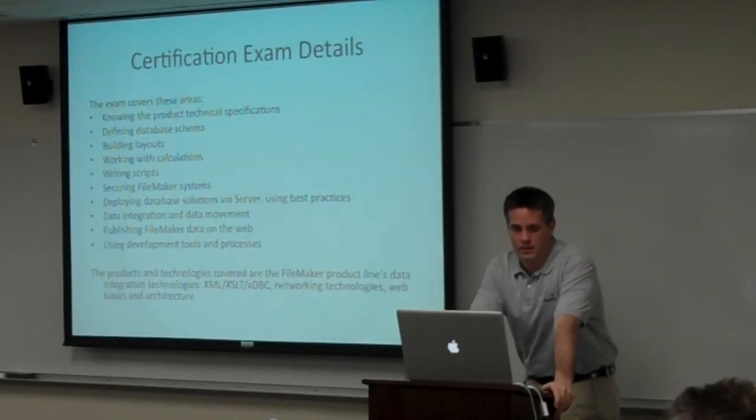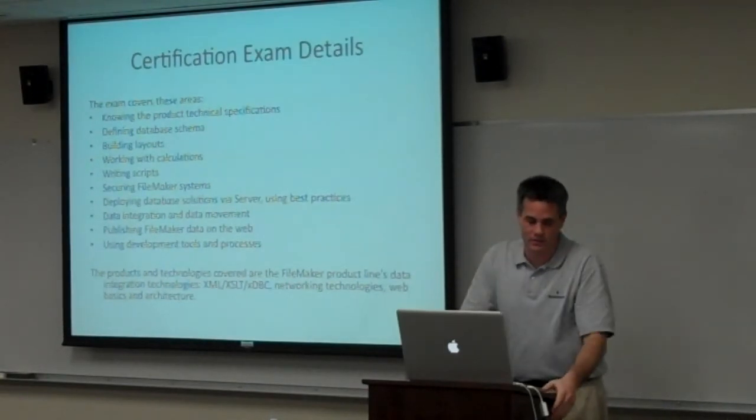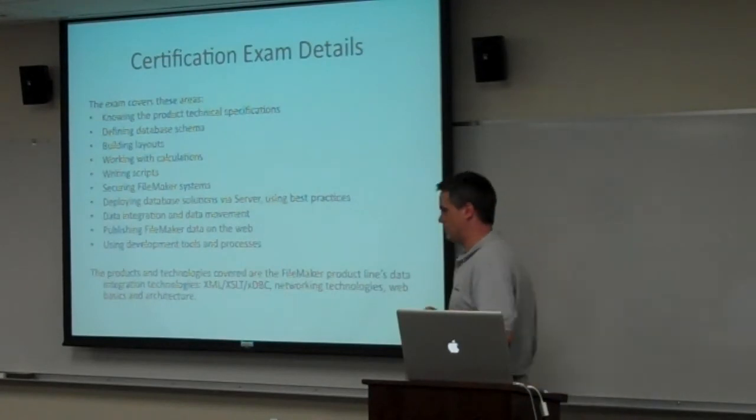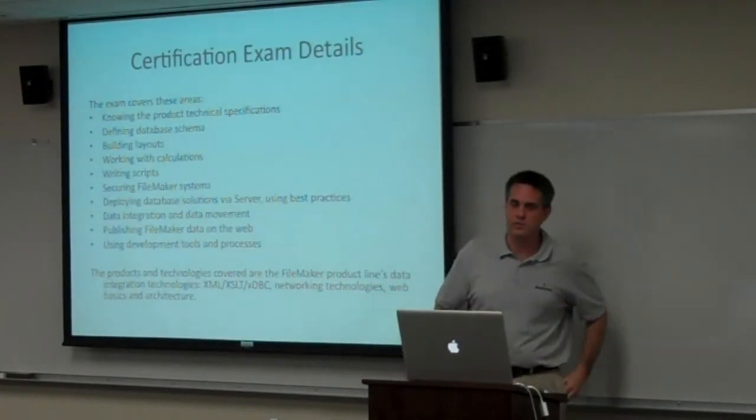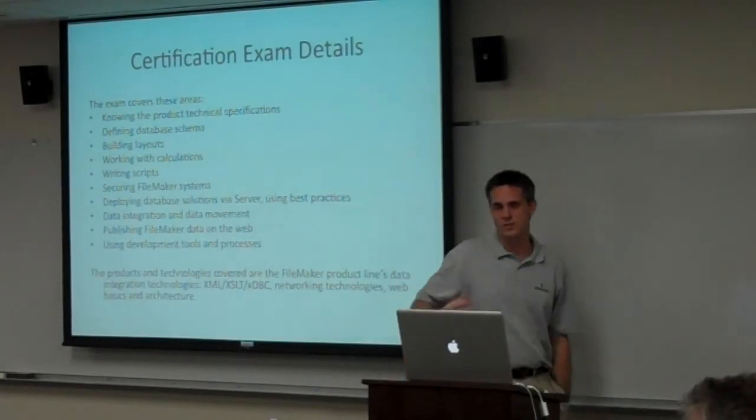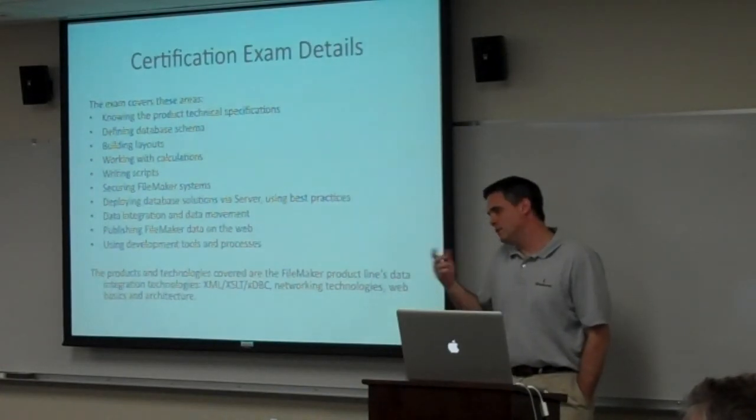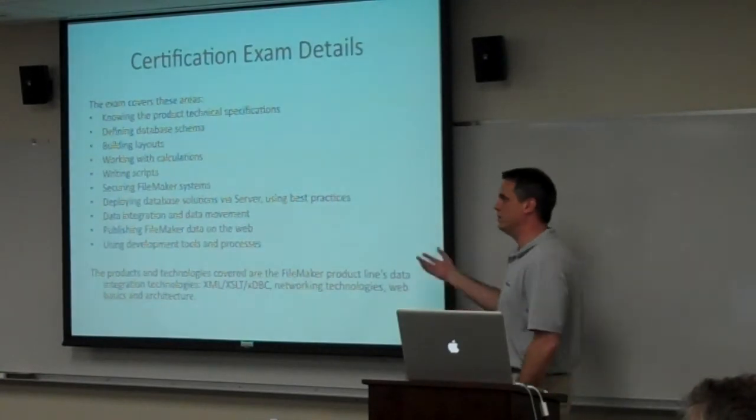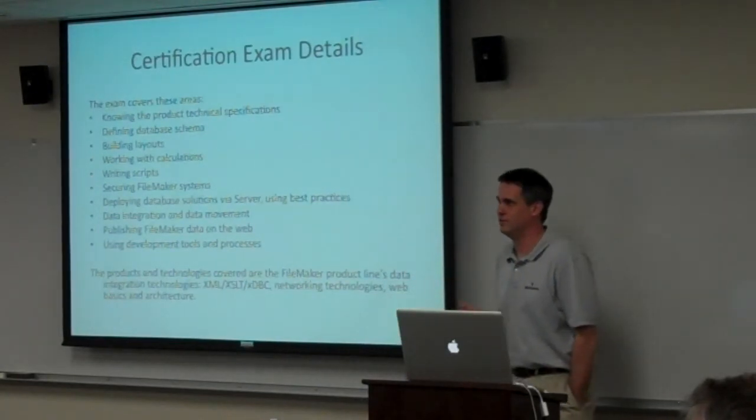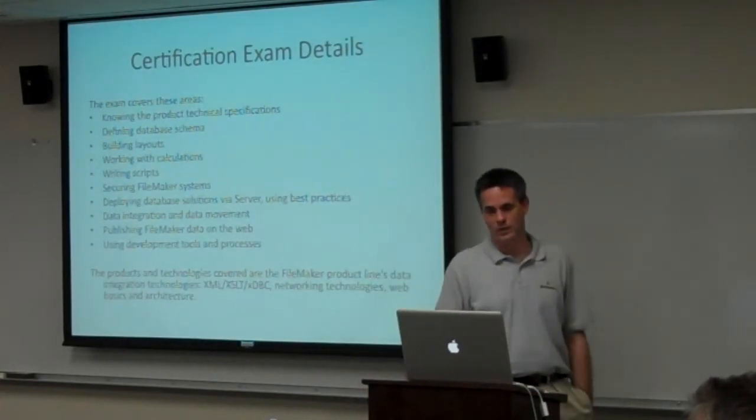Defining database schema. I'd say probably the part with the most weight in the exam is an understanding of how to map table occurrences in your relationship graph. There's various different questions on there that deal with similar relationship graphs. But it's very challenging. It's something that kind of makes you step outside the box a little bit. Not your standard one to many or many to many type of resolutions. But things like, on this one layout, you need to have two different portals—one showing everybody managed by this contact and one showing everybody who manages them. How many table occurrences would that require? Those types of things. And I'll talk in a second about how to approach questions like that. And I'll give you a sample question that I put together as well.